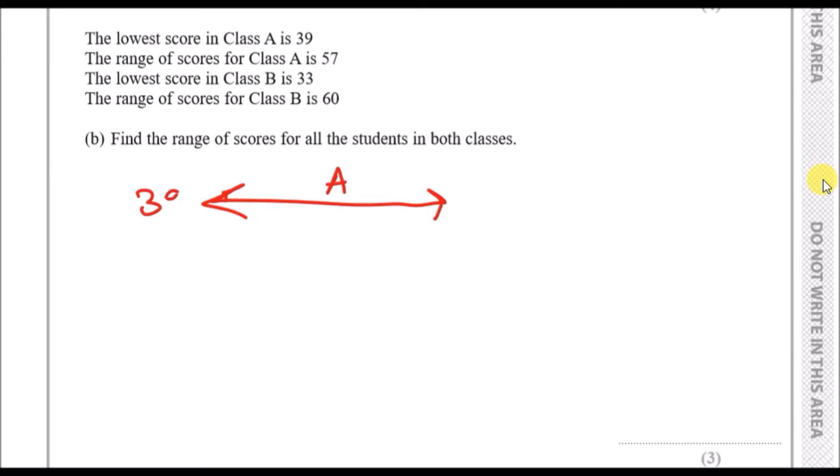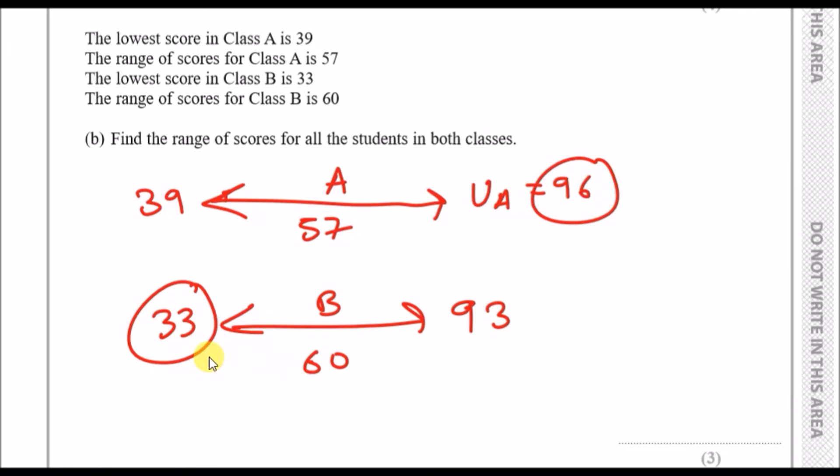I always try to do this visually. For class A, the lowest was 39 and we know the range is 57, so if the difference is 57, just add 57 to 39. That gives us 96, so the upper bound is 96. For class B, the range was 60 and the lowest score was 33. 33 plus 60 gives us 93, the upper bound. So the lowest in both classes was 33 and the highest was 96. The difference between them should give us 63.